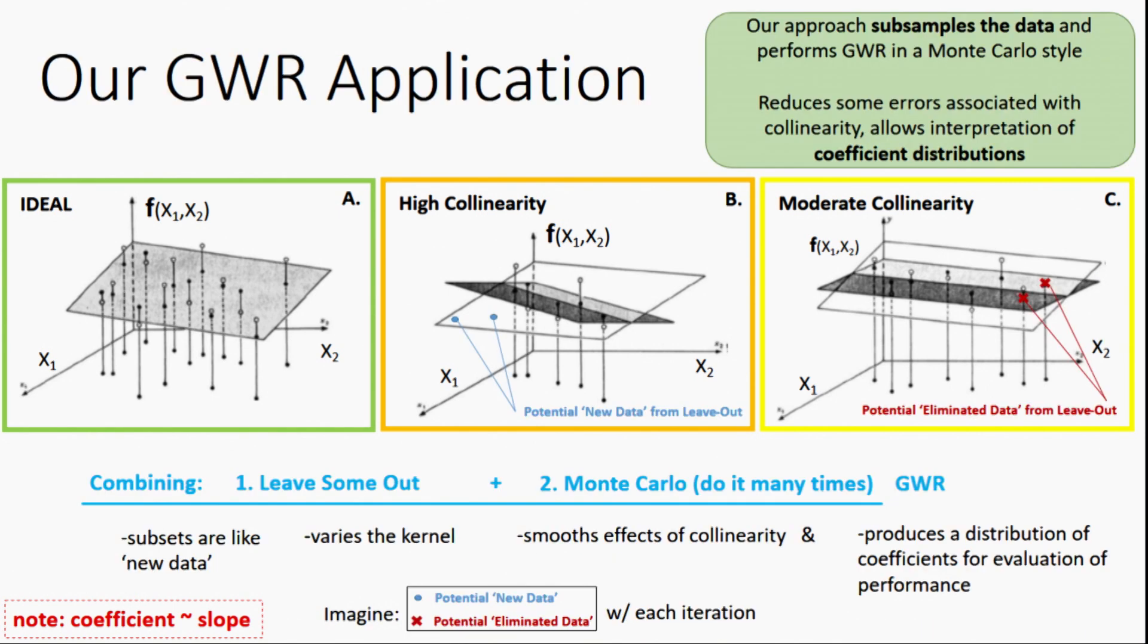Our approach subsamples the data and performs GWR in a Monte Carlo style. This reduces some of the errors associated with collinearity and allows us to interpret coefficient distributions through multiple runs. By combining techniques of leave some out and Monte Carlo, doing it many times, we're able to think of these subsets as new data. This varies the kernel and smooths the effects of collinearity, producing a distribution of coefficients that we can evaluate how our model performed.